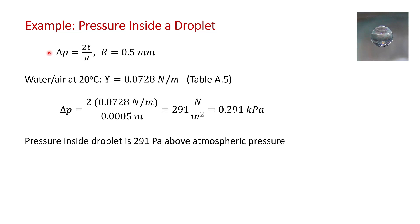Now you can go to your appendix, table A5, and look up the surface tension of a water-air interface at 20 degrees C. It's 0.0728 newtons per meter.